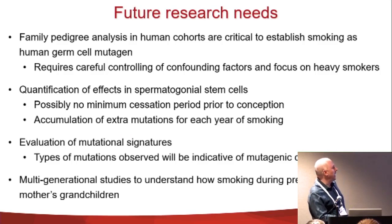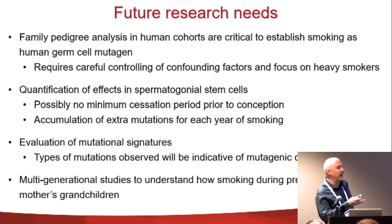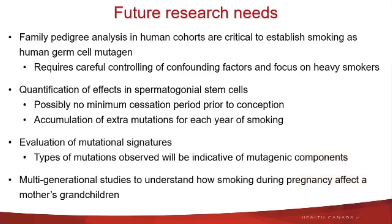Moving forward, the clear opportunity is to use new genomic tools to establish that smoking is clearly a human germ cell mutagen, by demonstrating increased numbers of mutations in the offspring of heavy smokers. It would be really important to quantify the effects in spermatogonial stem cells, because these are the cells present throughout the life of the individual — so if you affect them, even if you then stop smoking, the damage is done. There is now the ability to evaluate mutation signatures that can give confidence about the type of exposure happening by looking at the pattern of mutations. Finally, we need multi-generation studies to understand how smoking during pregnancy affects the children and grandchildren of the exposed parents.